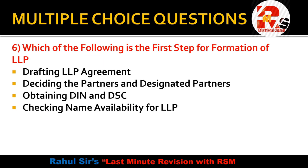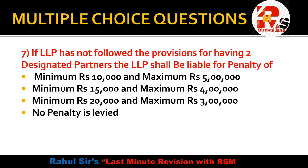Question 6: Which of the following is the first step for formation of an LLP (Limited Liability Partnership)? Options are: drafting LLP agreement, deciding the partners and designated partners, obtaining DIN (Director Identification Number) and DSC (Digital Signature Certificate), or checking name availability for LLP. The first step is deciding which individuals will be partners and which will be designated partners. After that, you obtain DIN and DSC.